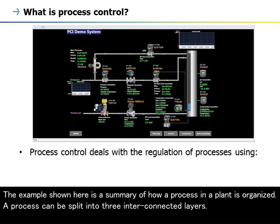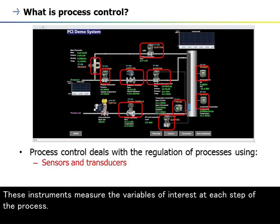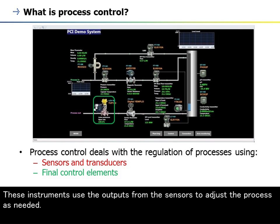A process can be split into three interconnected layers. The first layer consists of the sensors and transducers, commonly referred to as process instrumentation. These instruments measure the variables of interest at each step of the process. The second layer is made up of the final control elements, typically control valves. These instruments use the outputs from the sensors to adjust the process as needed.